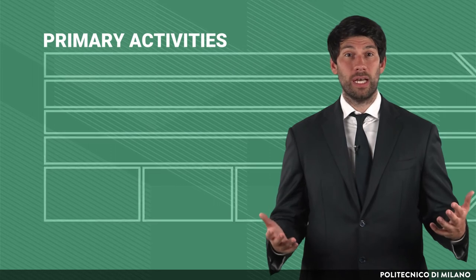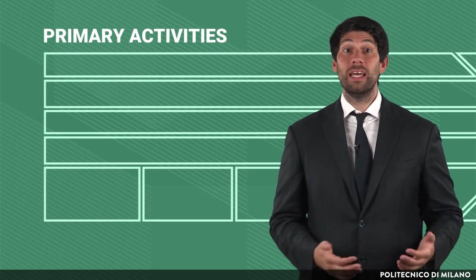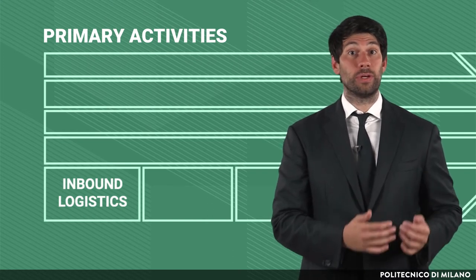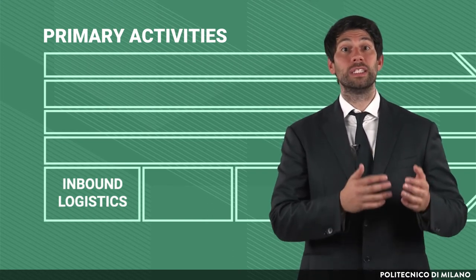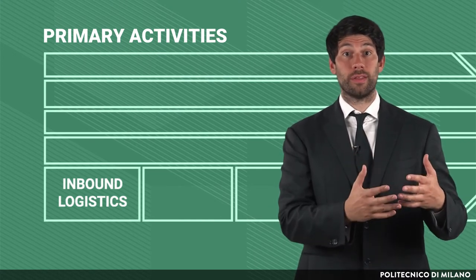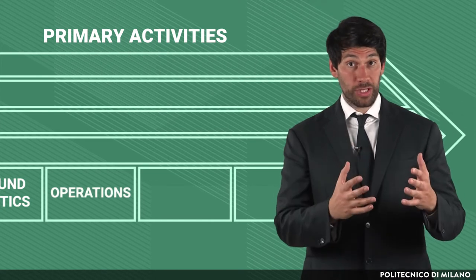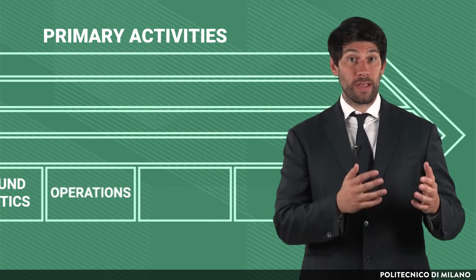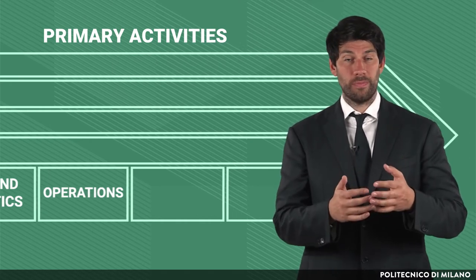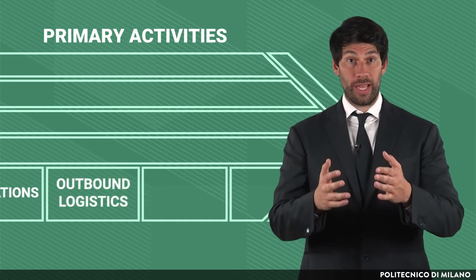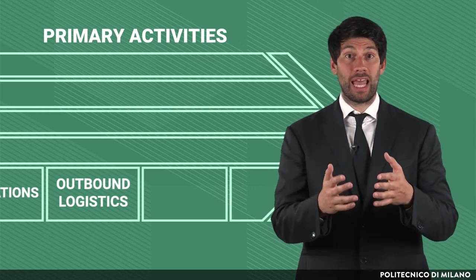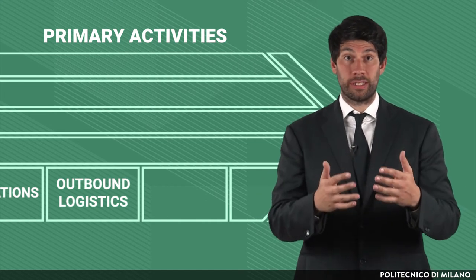Among primary activities we have inbound logistics — that is, the activities associated with receiving, storing, transporting and delivering the inputs used in the transformation process. And operations — that is, the activities leading to the transformation of inputs into finished products or services. Outbound logistics refers to activities required to store the finished product and physically distribute it to customers.